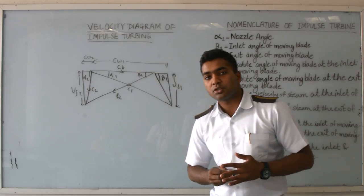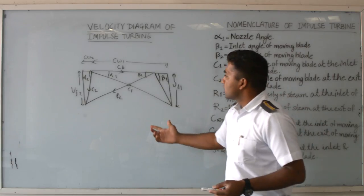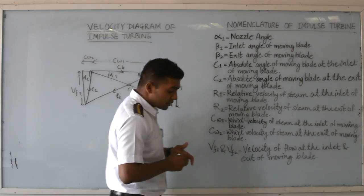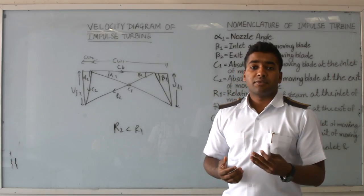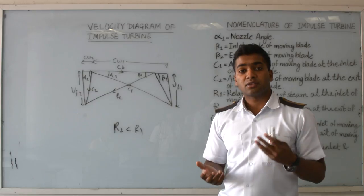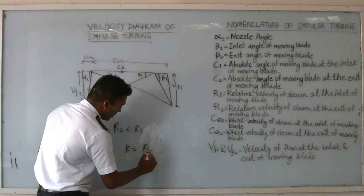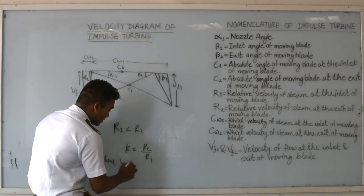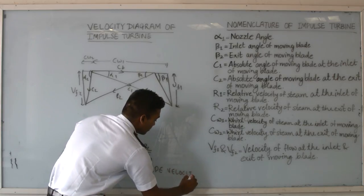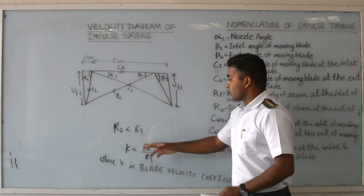All the nomenclature used in the combination of inlet and outlet velocity triangles is now clear. This diagram is very important because it is used when solving numericals on steam turbines. Now, r2 is less than r1 because when steam passes over the blades, friction is created, which causes a reduction in velocity. This reduction is quantified by the blade velocity coefficient k, where k equals r2 divided by r1.